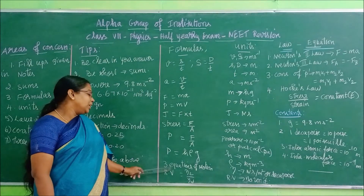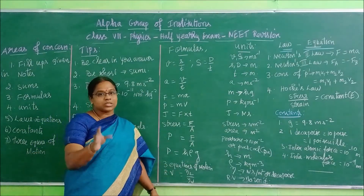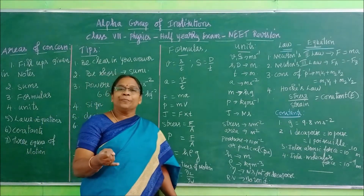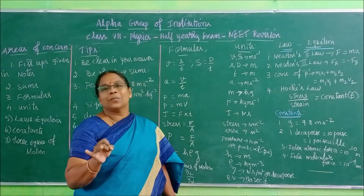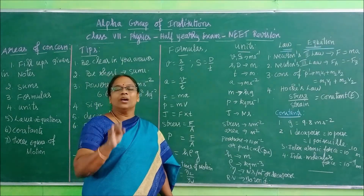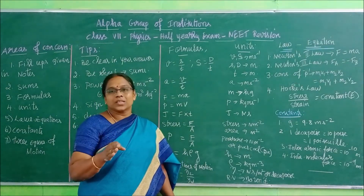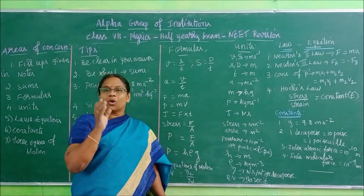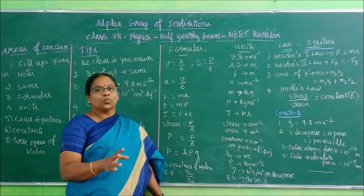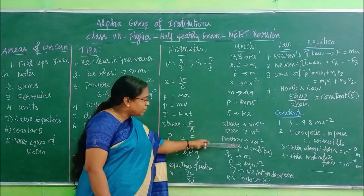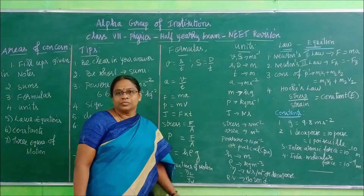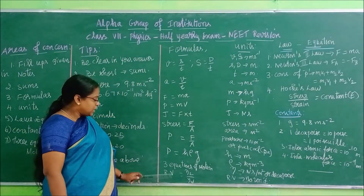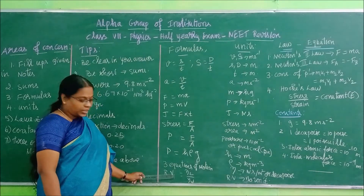And we have three equations of motion with all their units: V = U + AT; S = UT + ½AT²; V² = U² + 2AS. All the terms in these equations and their units will be covered here. You have to practice these.